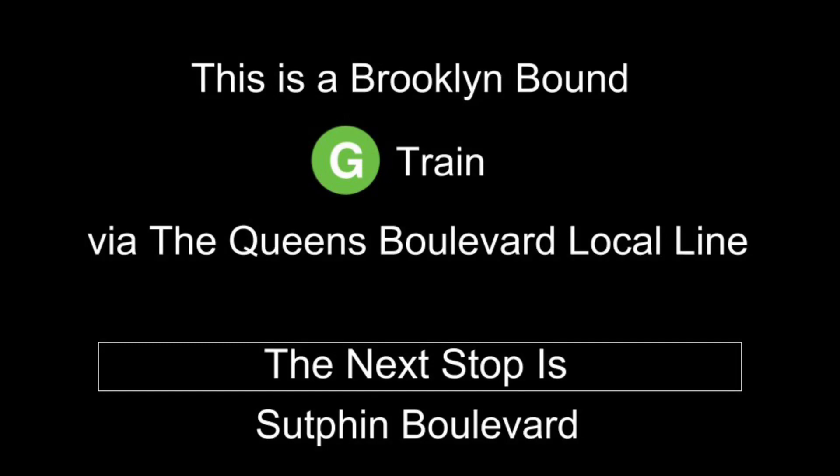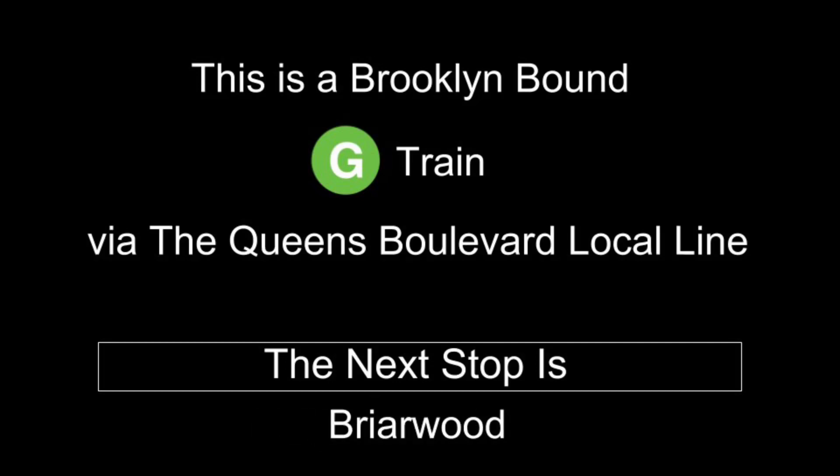This is a Brooklyn-bound G-Train via the Queens Boulevard local line. The next stop is Sutphin Boulevard. This is a Brooklyn-bound G-Train via the Queens Boulevard local line. The next stop is Briarwood.